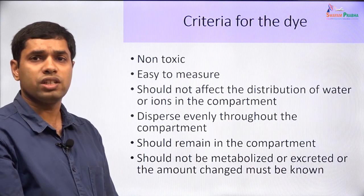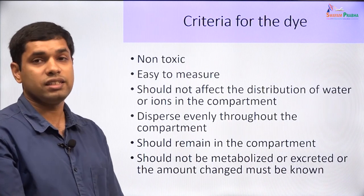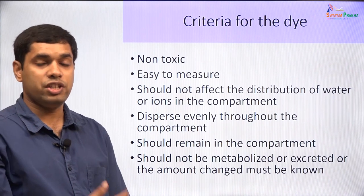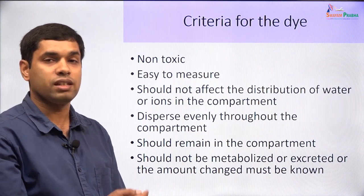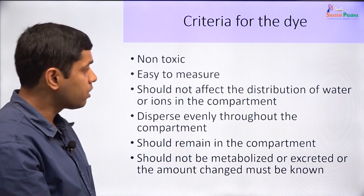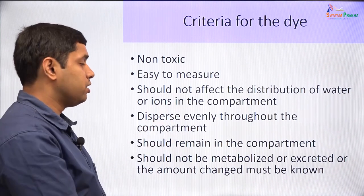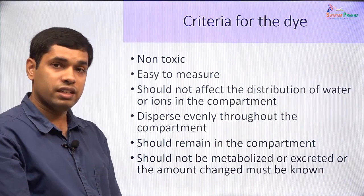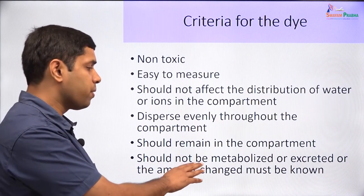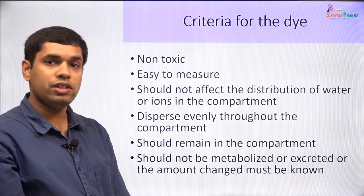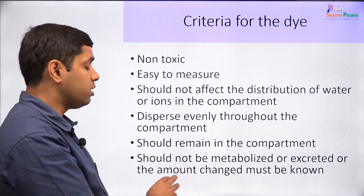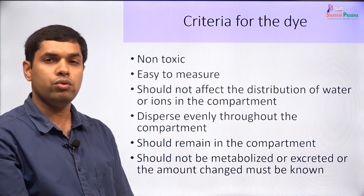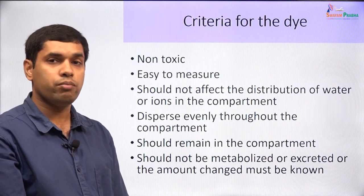If we have to use a particular compound or dye, there are certain criteria. The dye has to be non-toxic and easily measurable. When put in, it should not affect the distribution of body water, and it must evenly distribute throughout the entire compartment. It should remain in that compartment, and either it should not be metabolized, or if it is metabolized, the amount metabolized or excreted must be known. These are the criteria for a compound to be used for measuring body fluid spaces.